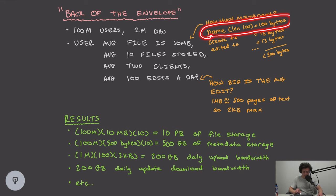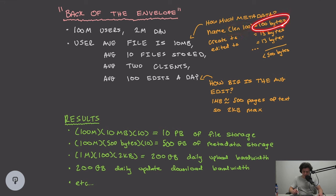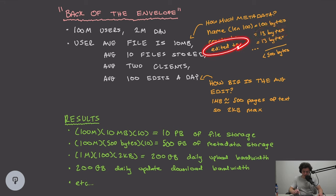First, how much metadata will we store per file? We need the file name — a string of characters, one byte each, so 100 bytes maximum for a 100-character name. We need a creation timestamp, which is typically 13 bytes, and an edited timestamp, also 13 bytes. Including chunk data and other fields, we can estimate roughly 500 bytes of metadata per file in total.